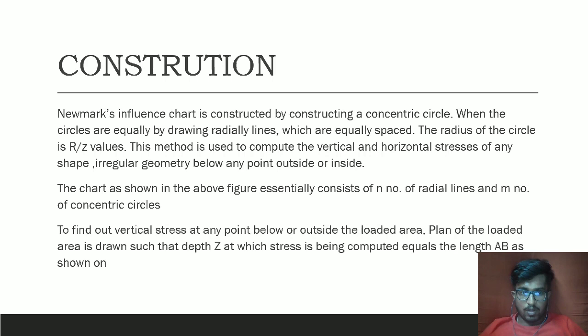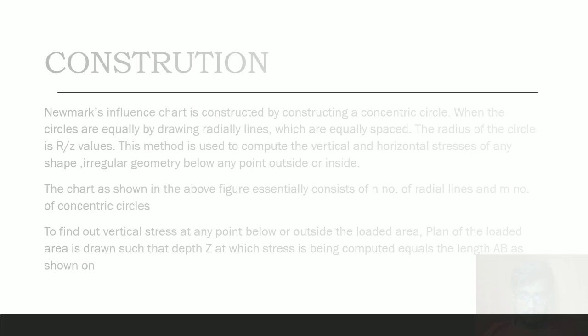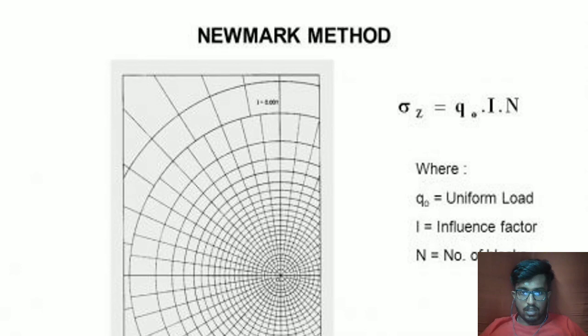To find the vertical stress at any point below or outside the loaded area, the plan of the loaded area is drawn such that depth Z at which stress is being computed equals the length AB as shown. The formula used is: σz = Q₀ × I × N, where Q₀ is the uniform load, I is the influence factor, and N is the number of elements (mesh areas) counted.